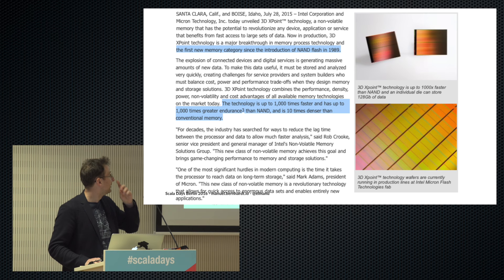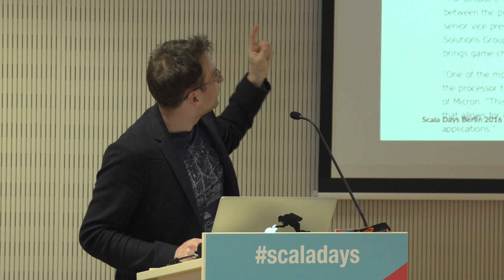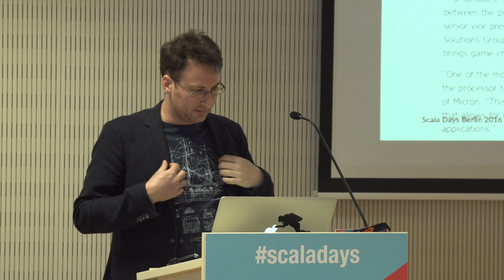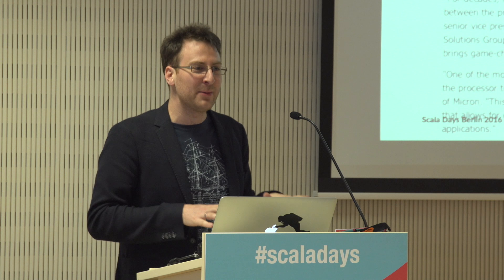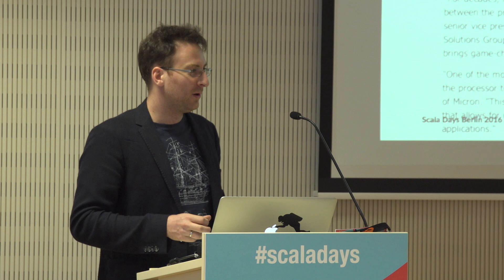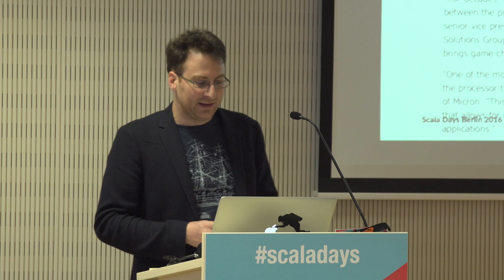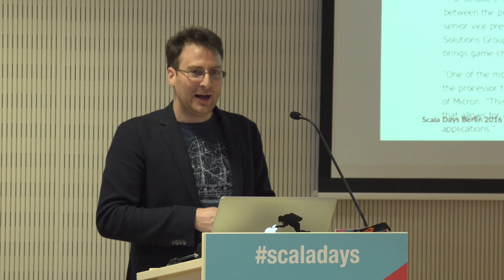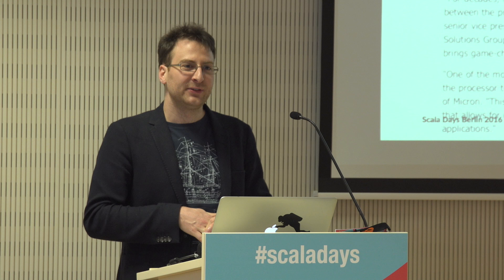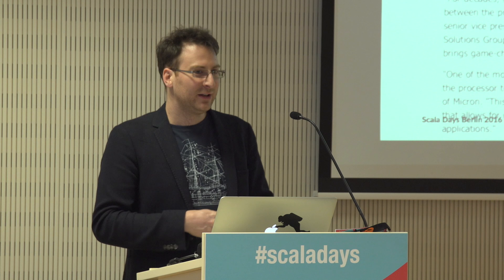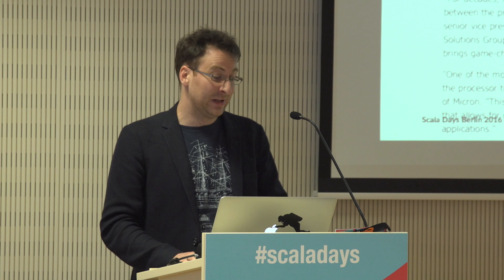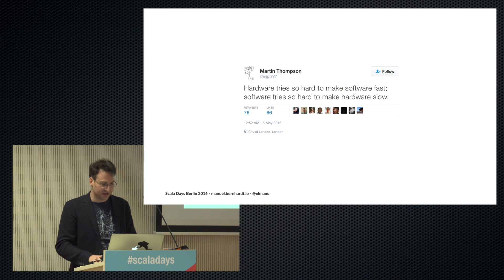Something many people missed last year: Intel and Micron Technology announced a new kind of memory. There hasn't been a new memory type since NAND in 1989. This new memory — 3D XPoint — is up to a thousand times faster and a thousand times more durable than NAND, and much denser. It's coming to a new line of Intel CPUs soon and will really affect how we use cache lines and computing. It's a genuine game changer.